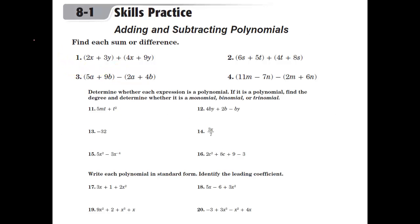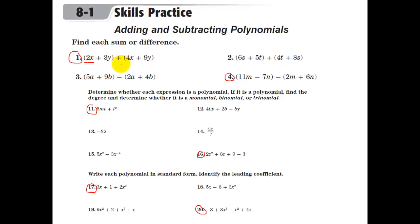Let's do some examples — we'll do problems 1, 4, 11, 16, 17, and 20. Find each sum or difference. This first one is all adding, so the parentheses don't actually matter in terms of order of operations. We have 2x plus 4x, which gives us 6x. Then we have 3y plus 9y, which gives us positive 12y. So we just add the pieces together that are alike.